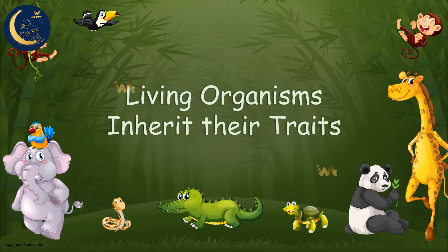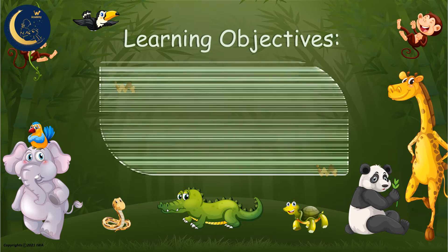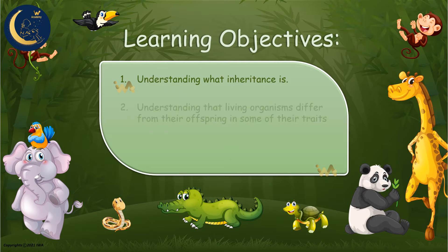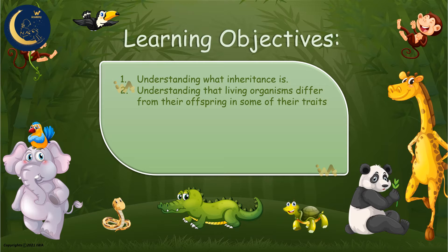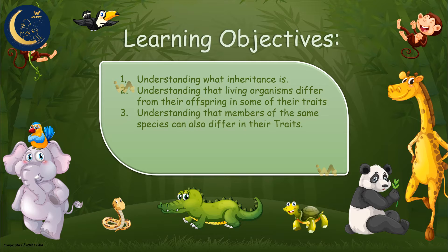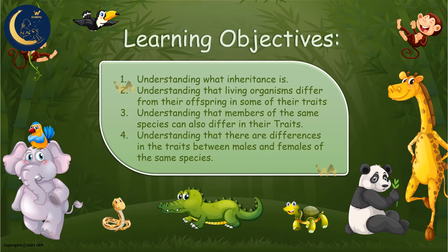Living Organisms Inherit Their Traits. Today we will be understanding what inheritance is, and that living organisms differ from their offspring in some of their traits. We will also be understanding that members of the same species can also differ in their traits, and that there are differences in the traits between males and females of the same species.